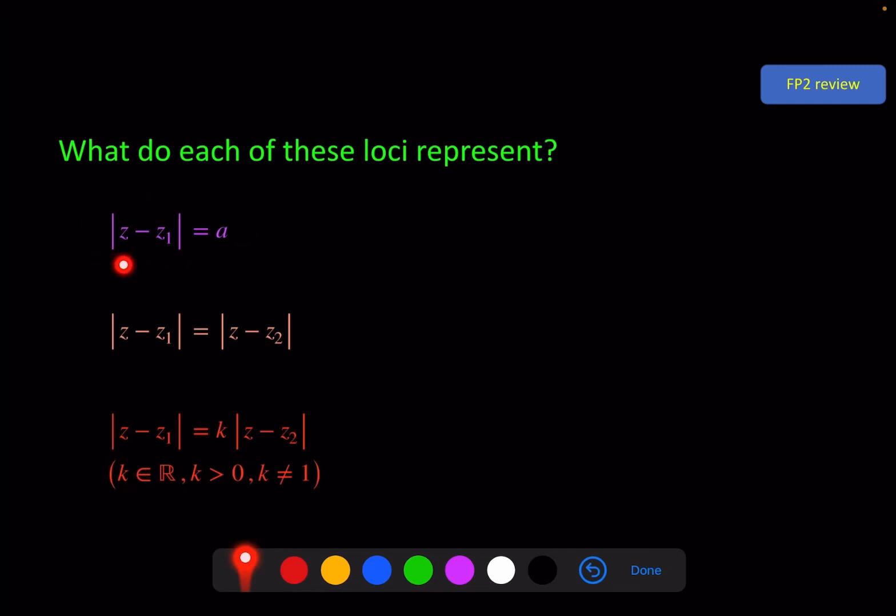The first one is a circle, centre z1, radius a. The second one is a perpendicular bisector of the line segment z1, z2. And the third one is a circle with an unknown centre and radius that you would have to find using the algebraic method that we looked at in the last video.